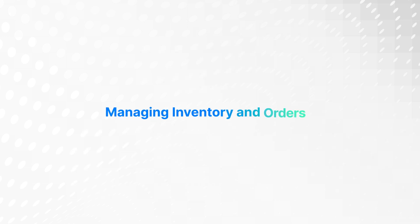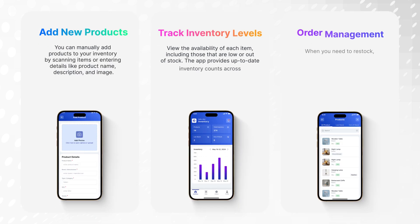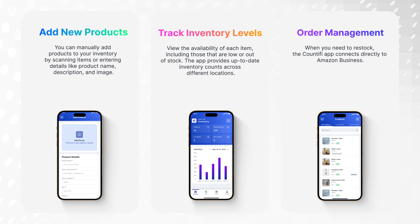Managing inventory and orders. You can manually add products to your inventory by scanning items or entering details like product name, description, and image. View the availability of each item, including those that are low or out-of-stock. The Countify app provides up-to-date inventory counts across different locations. When you need to restock, the app connects directly to Amazon Business to automatically push orders based on low stock alerts, search for additional products in your catalog or directly on Amazon Business, and complete transactions through Amazon, which will handle all fulfillment.